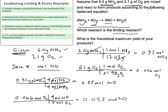Now that we've established the amounts of NO that can be produced from the given amounts of NH3 and O2, we can figure out which reactant is our limiting reactant. We compare the two amounts: the smaller one is sourced from our limiting reactant. 0.053 moles is smaller than 0.35, and 0.053 is sourced from oxygen — so oxygen is our limiting reactant.